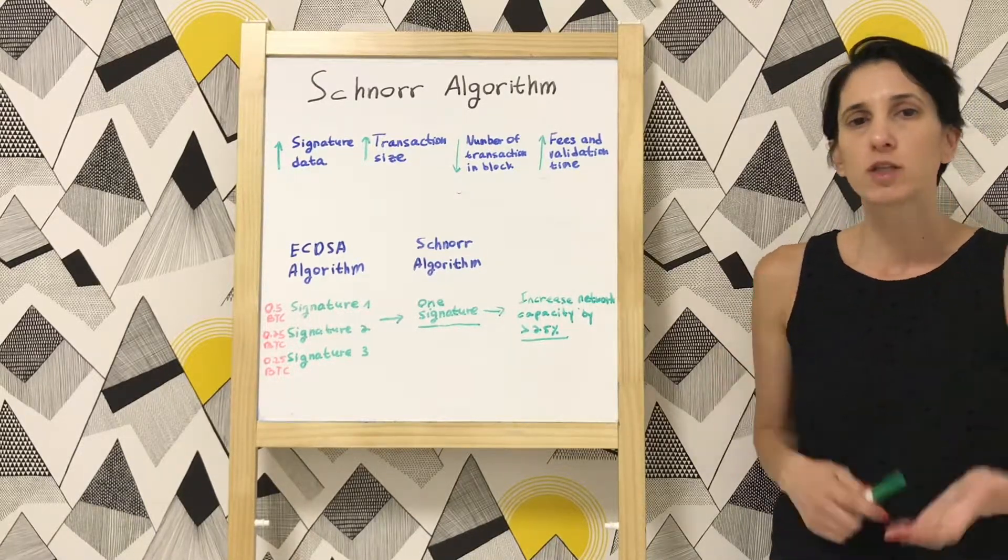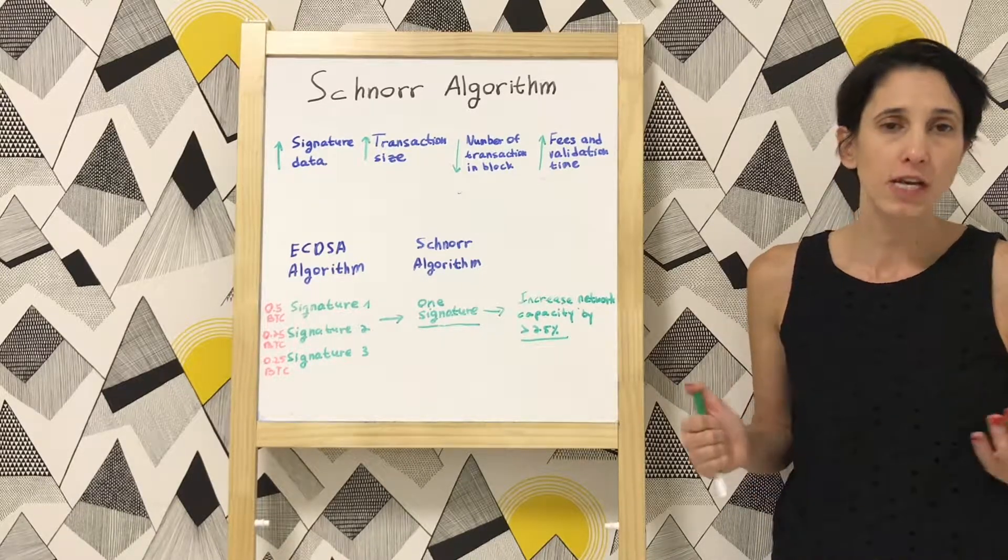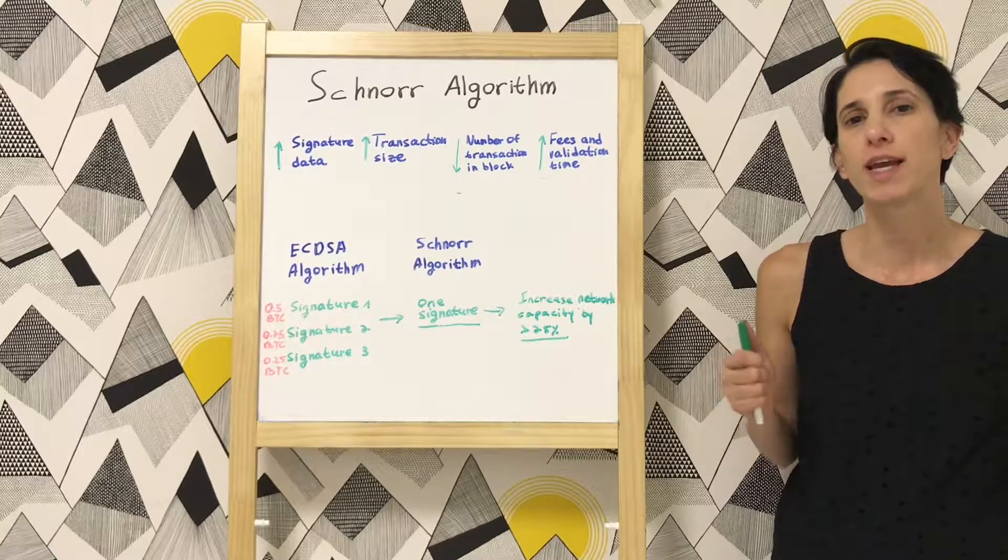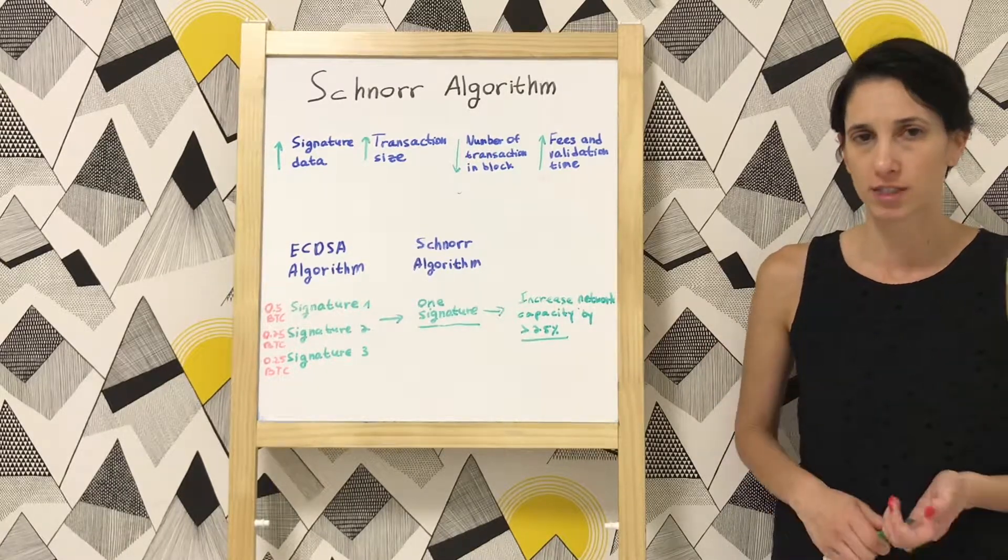So let's say Alice wants to send Bob one Bitcoin. A transaction will be published to the network. Each transaction contains digital signature, a cryptographic signature.